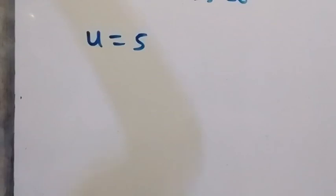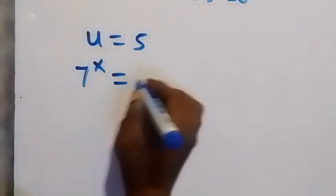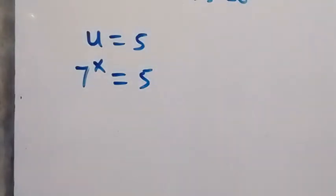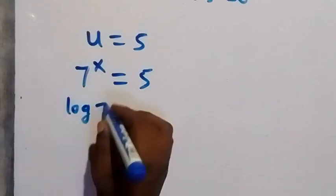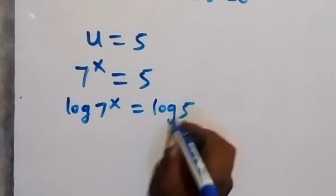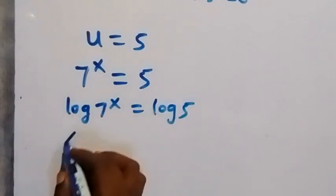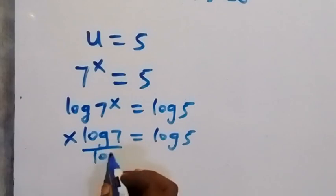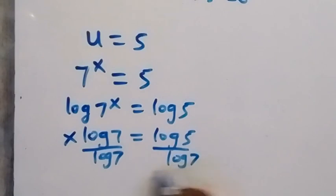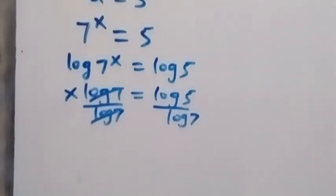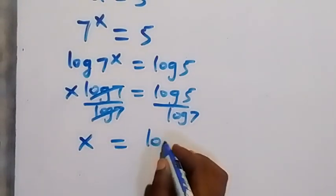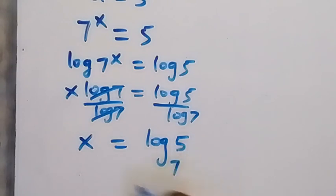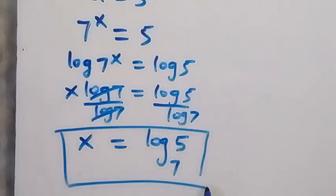We noted that u equals 7 raised to the power x. So we can write 7 raised to the power x equals 5. Taking the log on both sides: log of 7 to the power x equals log 5, so x times log 7 equals log 5. Dividing both sides by log 7, x equals log base 7 of 5. This is the real solution to this given problem.